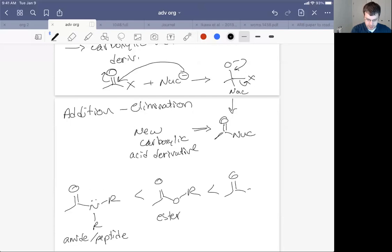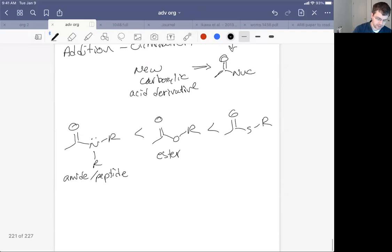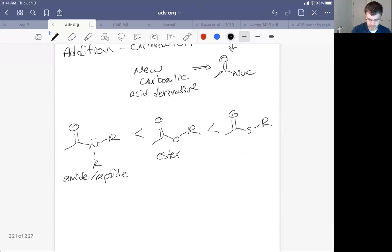After that, we're going to see a thioester. Now a thioester is more reactive than an ester, it turns out. The sulfur atom's a little bit more polarizable, so it's a better leaving group from the tetrahedral intermediate. But otherwise it's also less electronegative, that sort of thing. It's just a better leaving group from the tetrahedral intermediate.